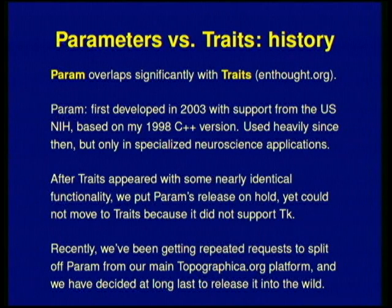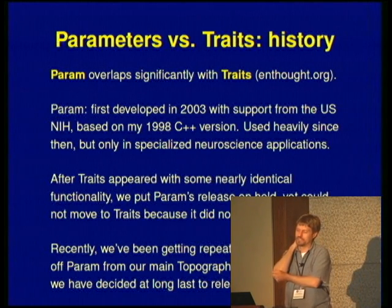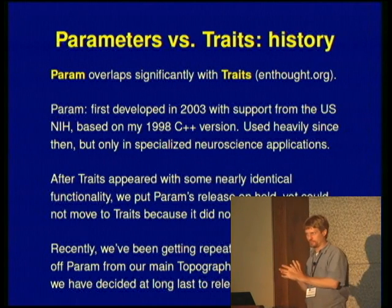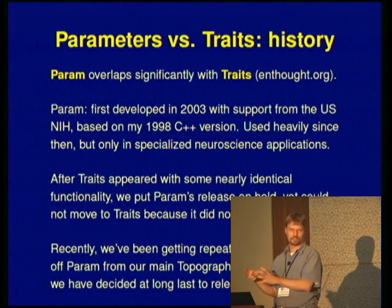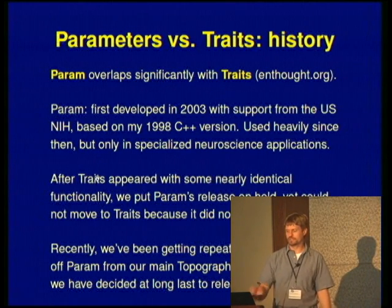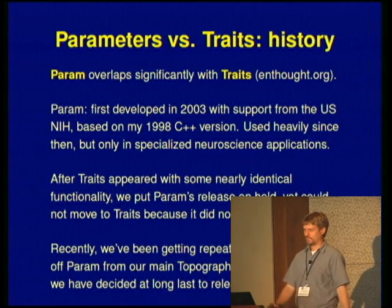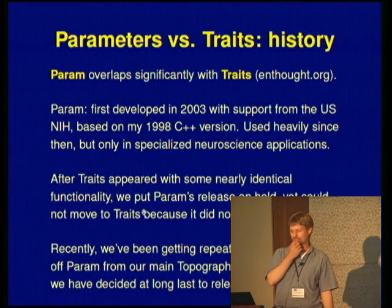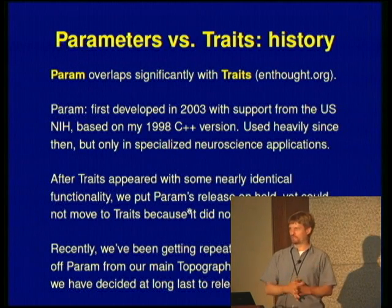Anyone who uses traits will wonder how this relates to it — and in fact it overlaps quite significantly with what traits offers. PARAM has been in continuous use since 2003, originally dating from a 1998 C++ version, used in the specialized field of computational neuroscience. When traits appeared around 2005 or 2006, we decided we didn't need to release PARAM. But we couldn't actually use traits because we were using TK in our application and traits didn't support it. So we kept using PARAM, and it works very well for us.